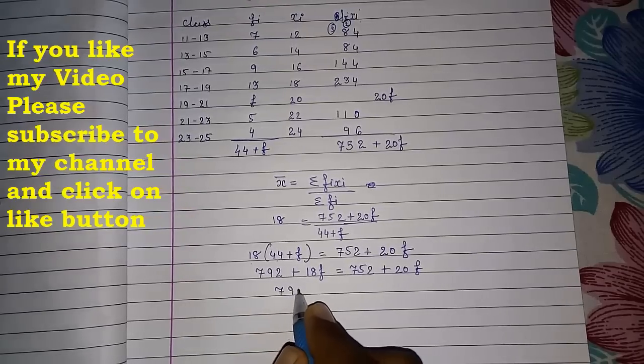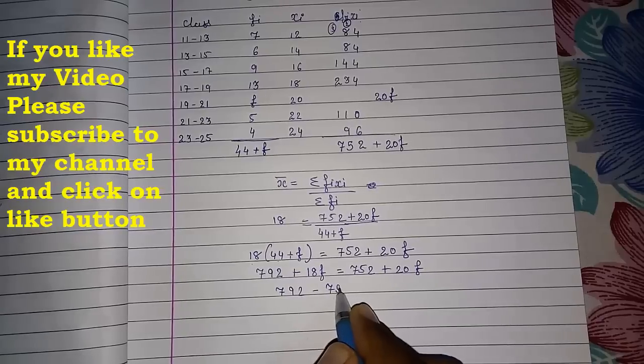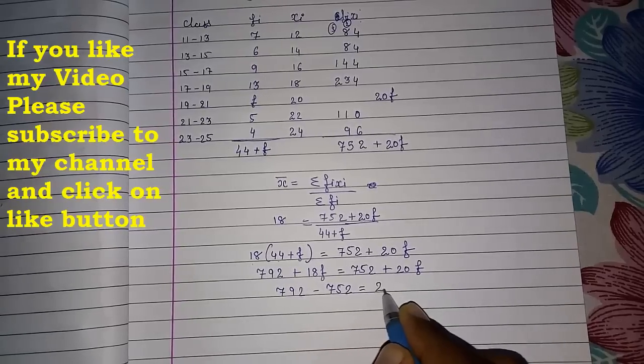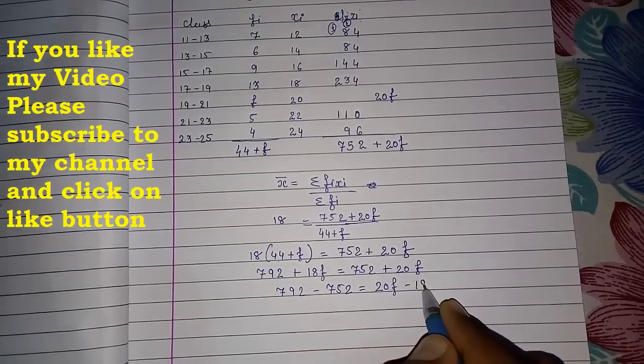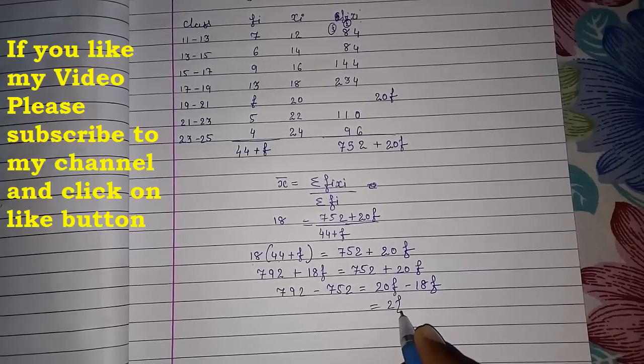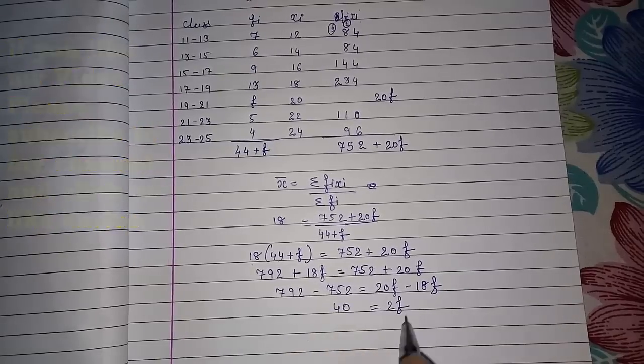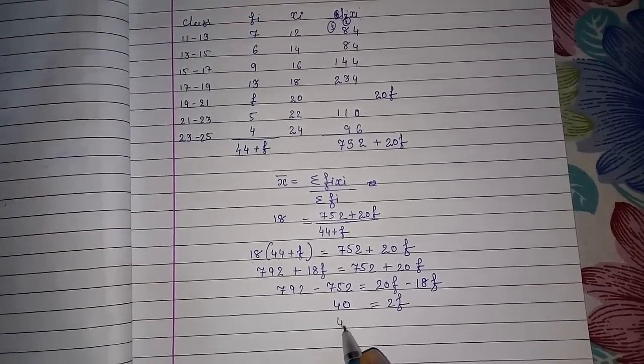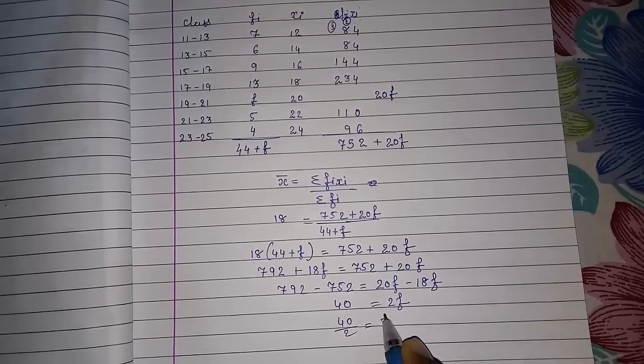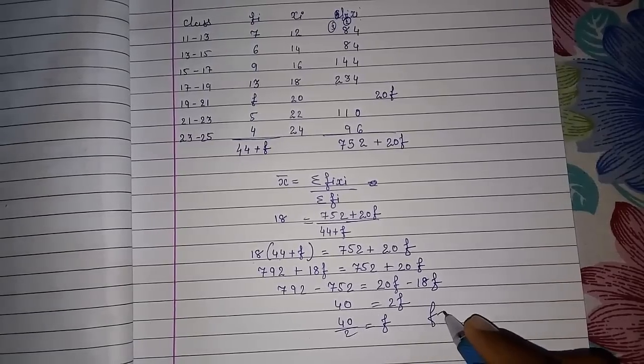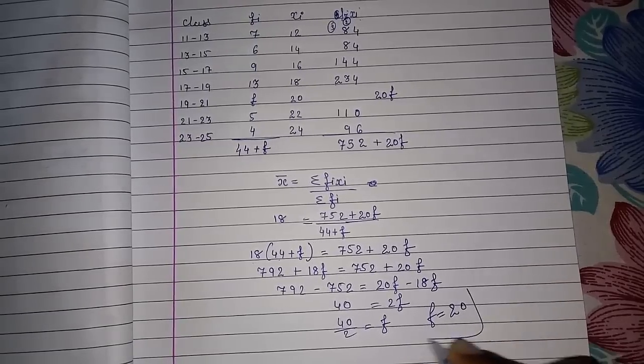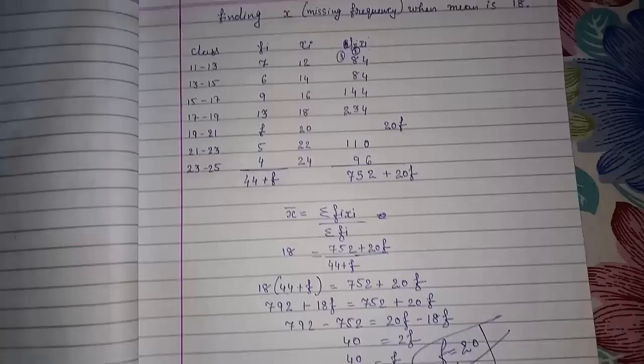Directly I come to know that 40 by 2 gives you F. So I come to know that F will be 20. So this way we can find the missing frequency when mean is given to you.